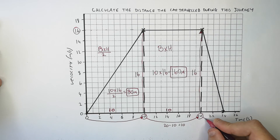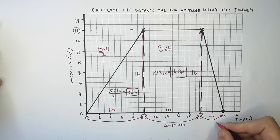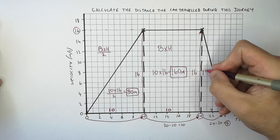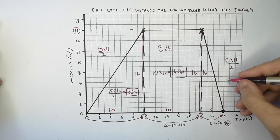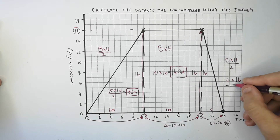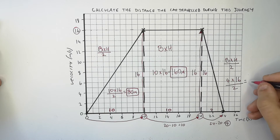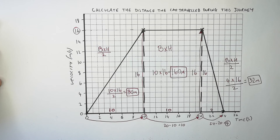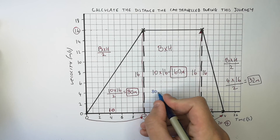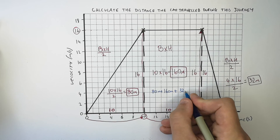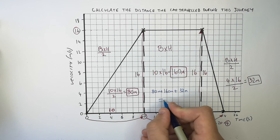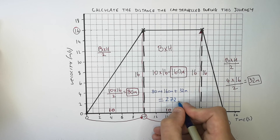Now we work out the distance the car travelled while decelerating. The base is 4 and the height is still 16. You do base times height divided by 2 — so 4 times 16 divided by 2 — which gives you a distance of 32 metres. To work out the total distance, you do 80 plus 160 plus 32, which gives you a total distance of 272 metres.